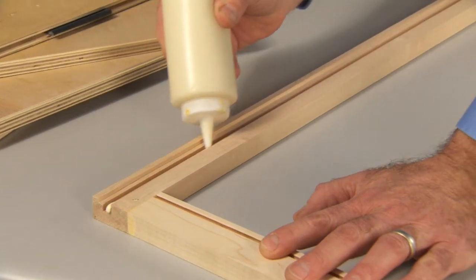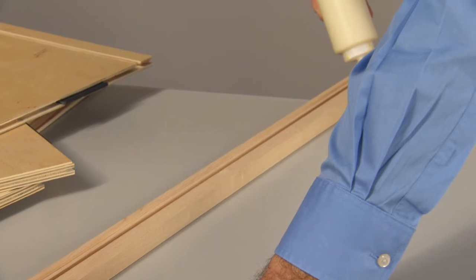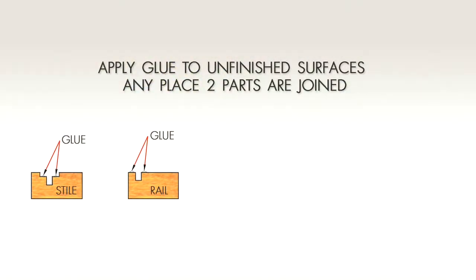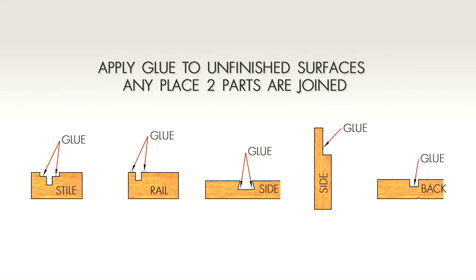Glue must be applied to unfinished surfaces any place two parts are joined: front frame styles and rails, female dovetails, the back rabbets of sides, and in grooves of backs.